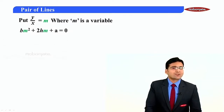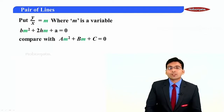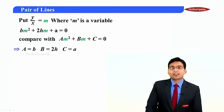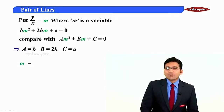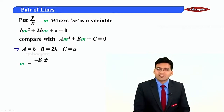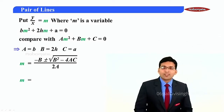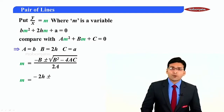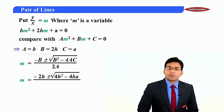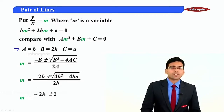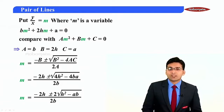This is a quadratic in m. Comparing with am² + bm + c, we get a = b, b = 2h, and c = a. The roots are m = (-2h ± √(4h² - 4ba)) / 2b, which simplifies to m = (-h ± √(h² - ab)) / b.